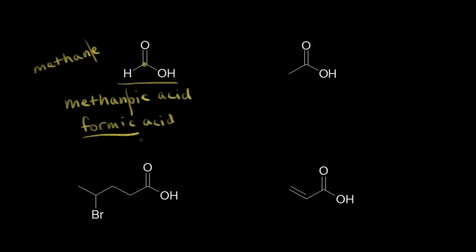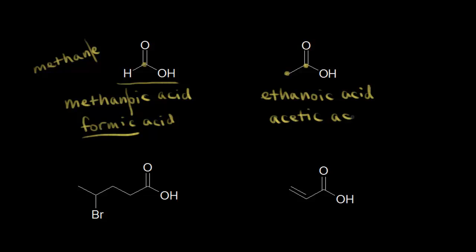There are lots of really interesting carboxylic acids with interesting common names. Let's look at a two-carbon carboxylic acid. Using IUPAC nomenclature, that would be ethanoic acid — ethane, drop the E, add oic acid. The common name for this is acetic acid, which is the one you'll hear more often. This name comes from the Latin word for vinegar, because vinegar is just a dilute solution of acetic acid in water.